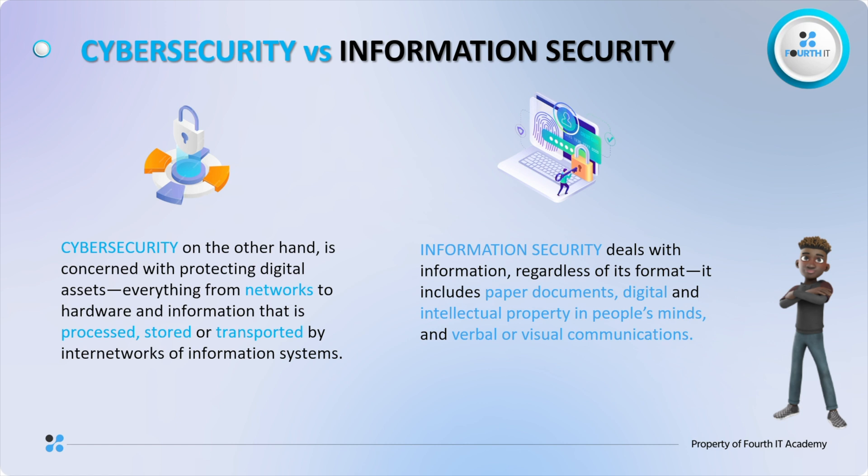Information security also addresses risks related to both digital and physical forms of information, such as documents, files, records, intellectual properties, and buildings of all sorts of organizations. Information security also talks about safeguarding information assets against a wide range of threats, including human error — which is the biggest of all — natural disasters, physical theft, espionage, and unauthorized access.